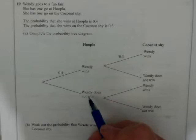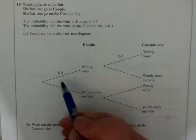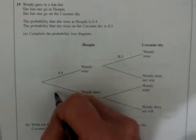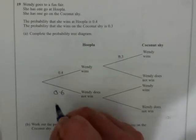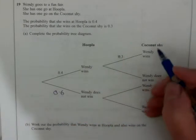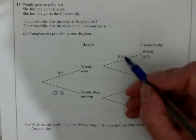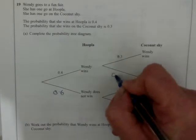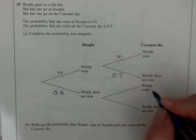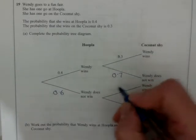So Wendy can win, or Wendy does not win. There's no other possibility. So if Wendy wins is 0.4, then she won't win is 0.6. And in a different game, she's got a chance of 0.3 of winning, and her chance of not winning is 0.7. So these branches always add to one.